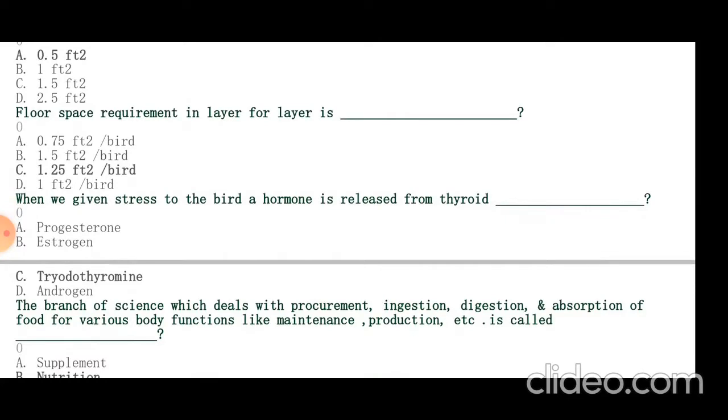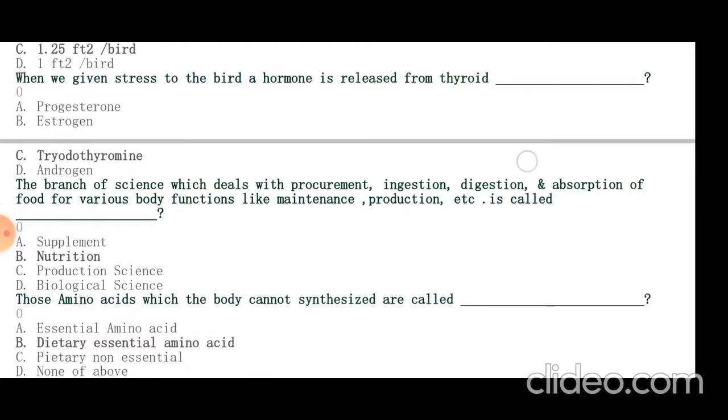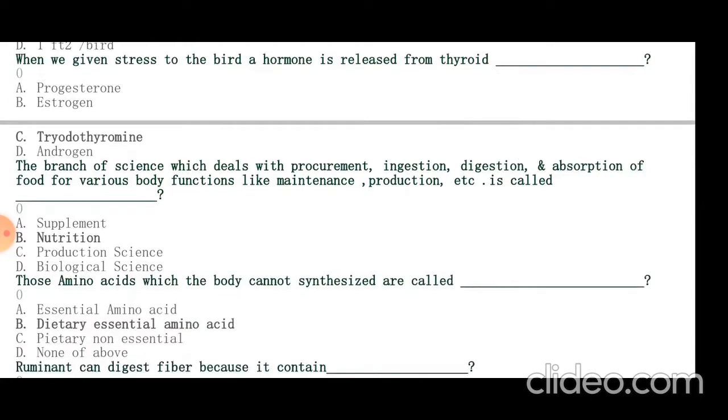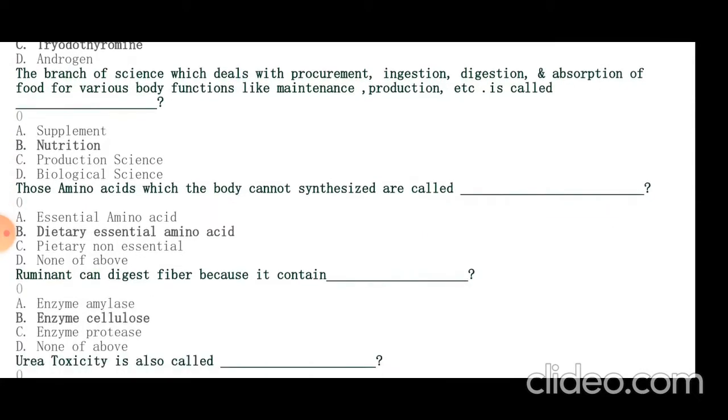The branch of science which deals with procurement, ingestion, digestion and absorption of food for various body functions like maintenance and production is called nutrition. Amino acids which the body cannot synthesize are called dietary essential amino acids. They are 8 to 10 in number. Ruminants can digest fiber because they contain enzyme cellulase.